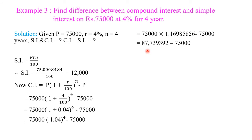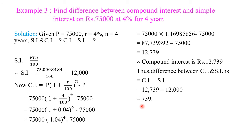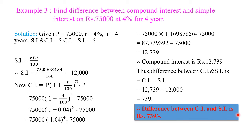After solving, we get compound interest equal to 12,739 and simple interest is 12,000. Thus, the difference between compound interest and simple interest is 739. In this problem, we first calculated simple interest, then compound interest, and then the difference between them, getting the answer 739.